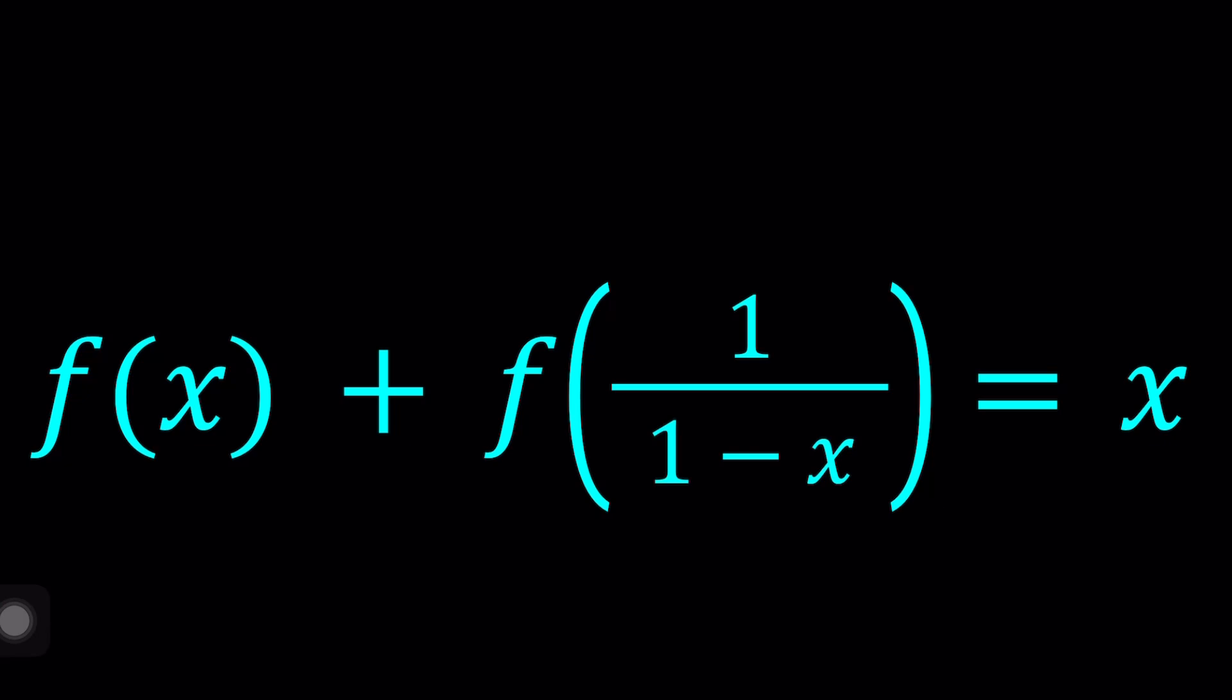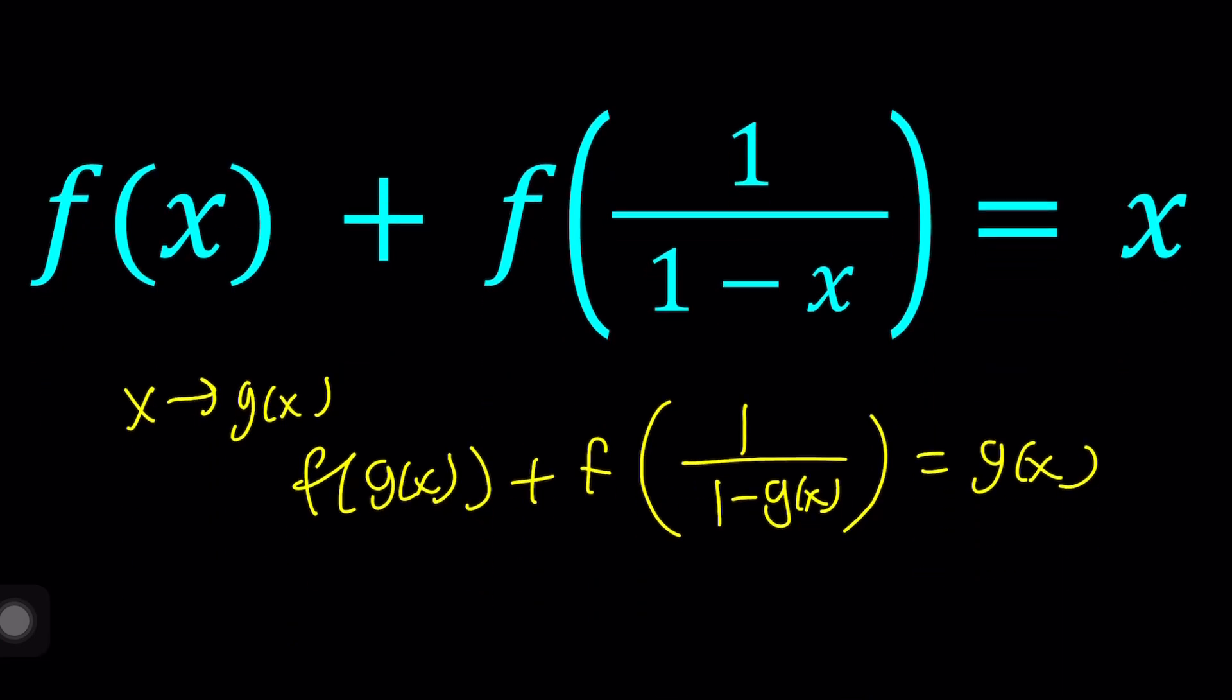Alright, let's see. One of the things that you can do is replacing x with something, replacing x with another function of x, right? Let's call that g of x. And if you do that, for example, if you replace x with g of x, it's just going to be f of g of x plus f of 1 over 1 minus g of x equals g of x, because everywhere you need to replace x with g of x.